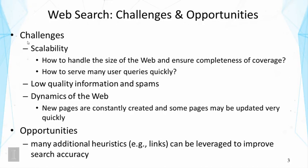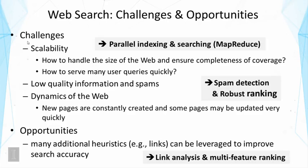Web pages are linked with each other, so the linking information is something we can leverage. To address these challenges and opportunities, one approach is parallel indexing and searching to handle scalability. Google's implementation of MapReduce has been very influential in that aspect. Second, there are techniques for spam detection to prevent spam pages from being ranked high, and techniques for robust ranking using many signals so that it's not easy to game the search engine with a particular trick.